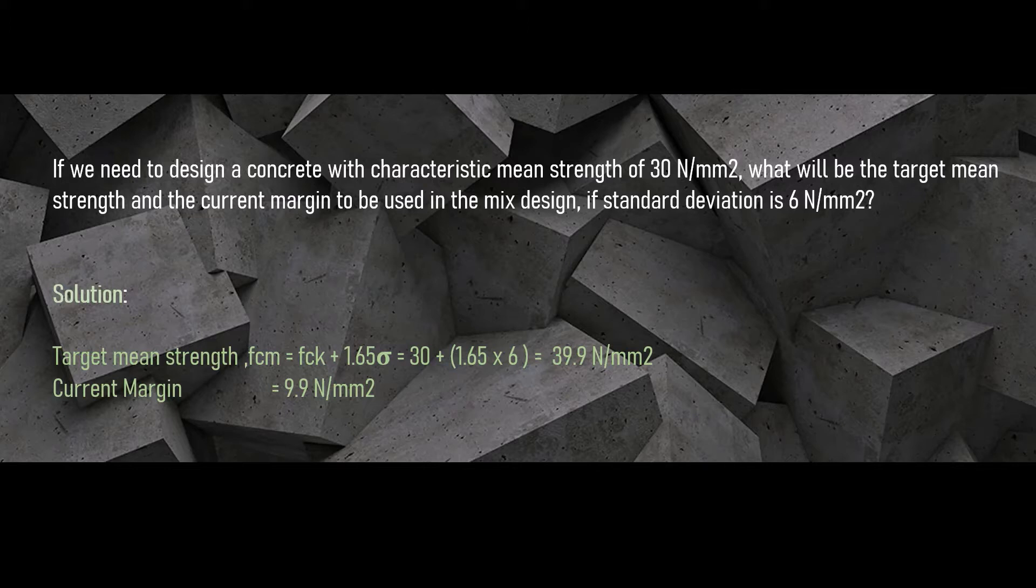After the analysis of numerous concrete test results for various projects, the strength of concrete falls into some pattern of normal frequency distribution curve, as shown. The characteristic compressive strength is defined as a strength of concrete below which not more than 5% of the test results are expected to fall.